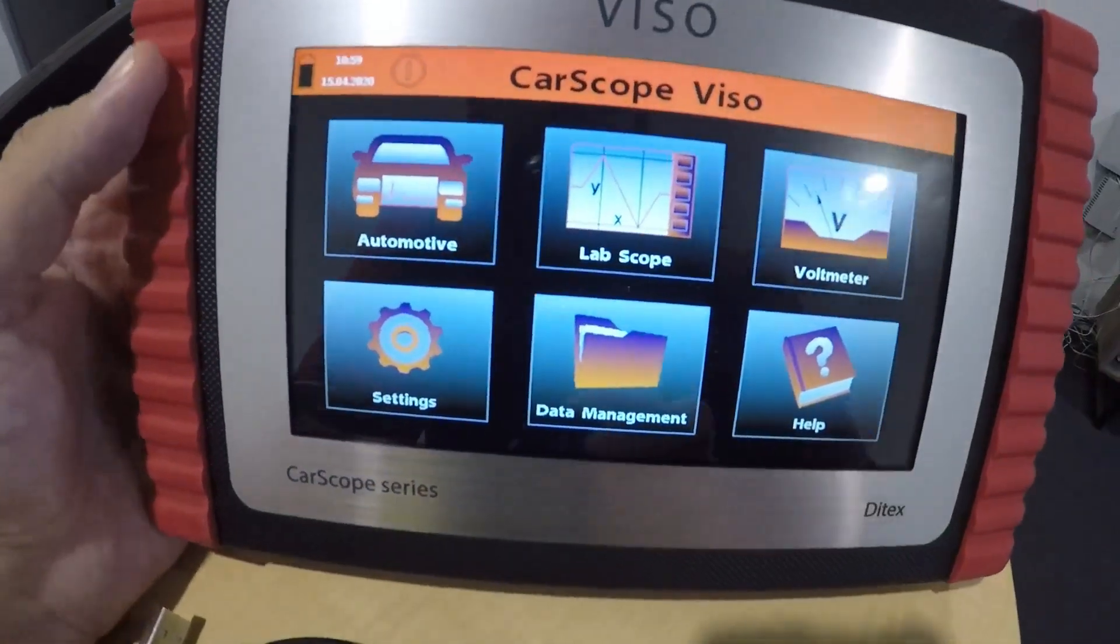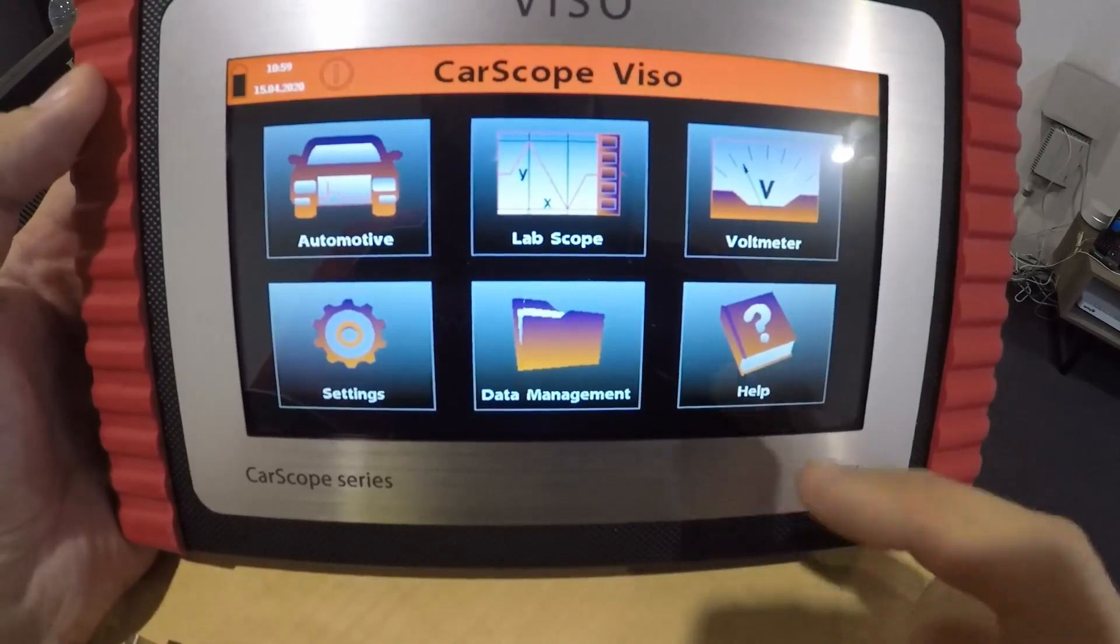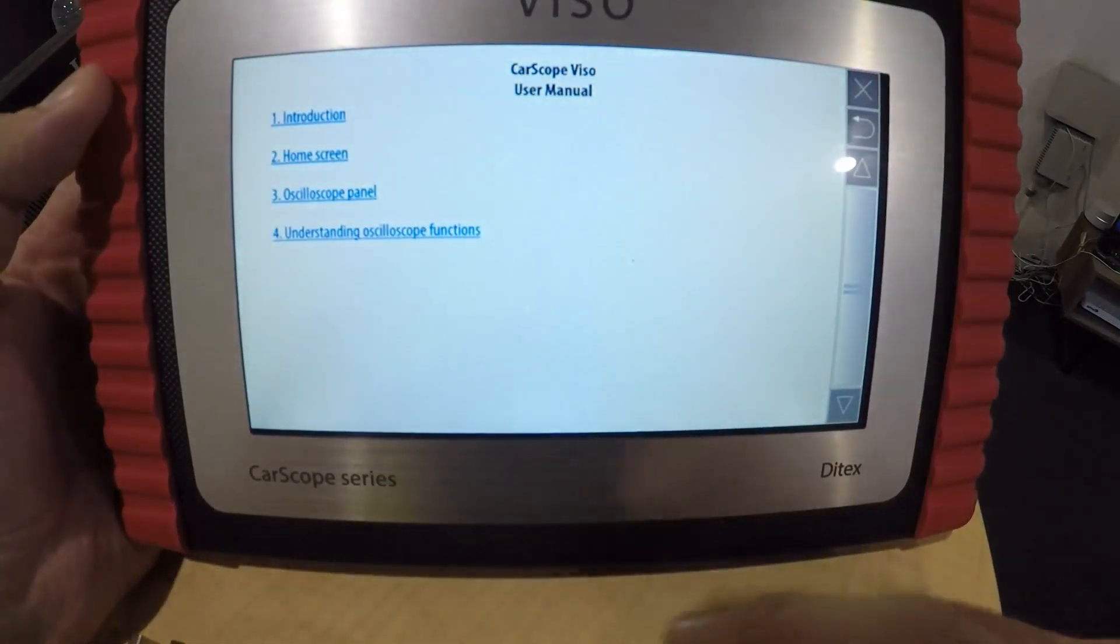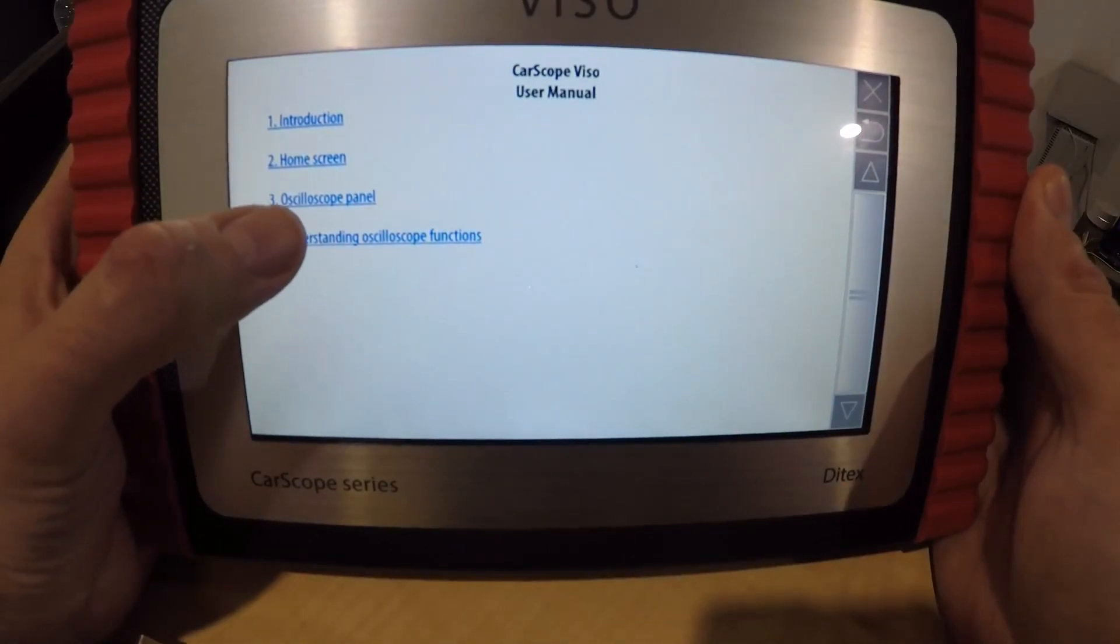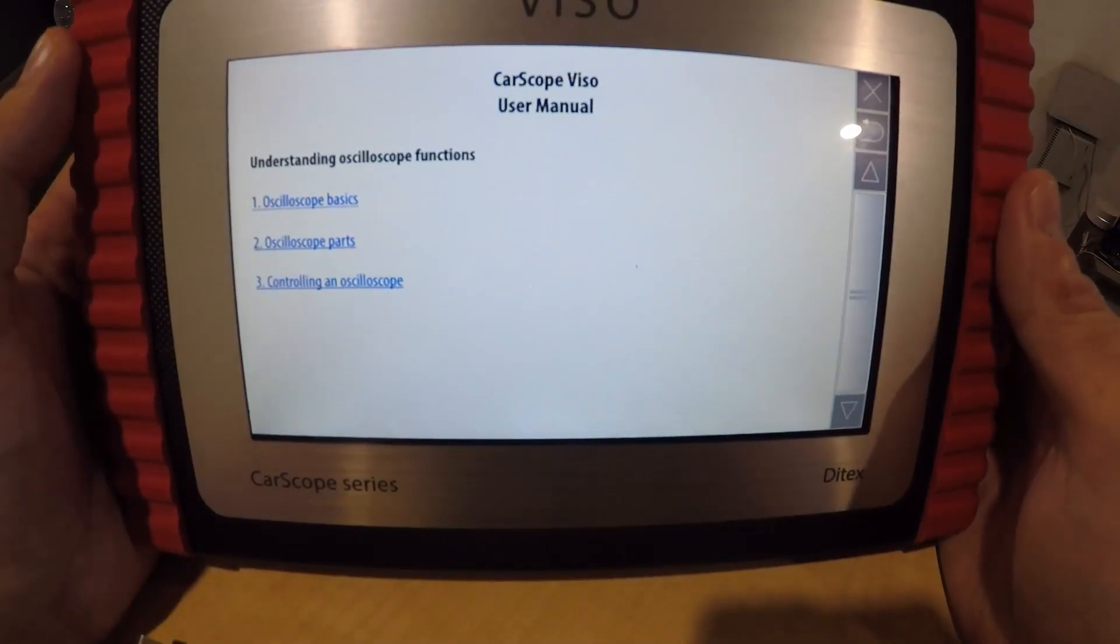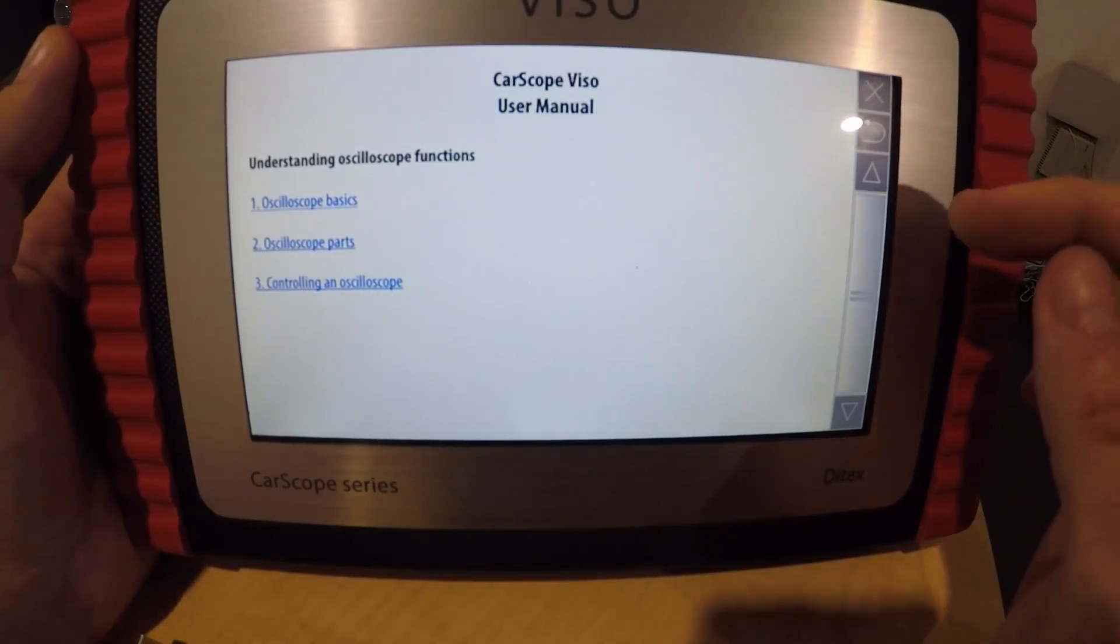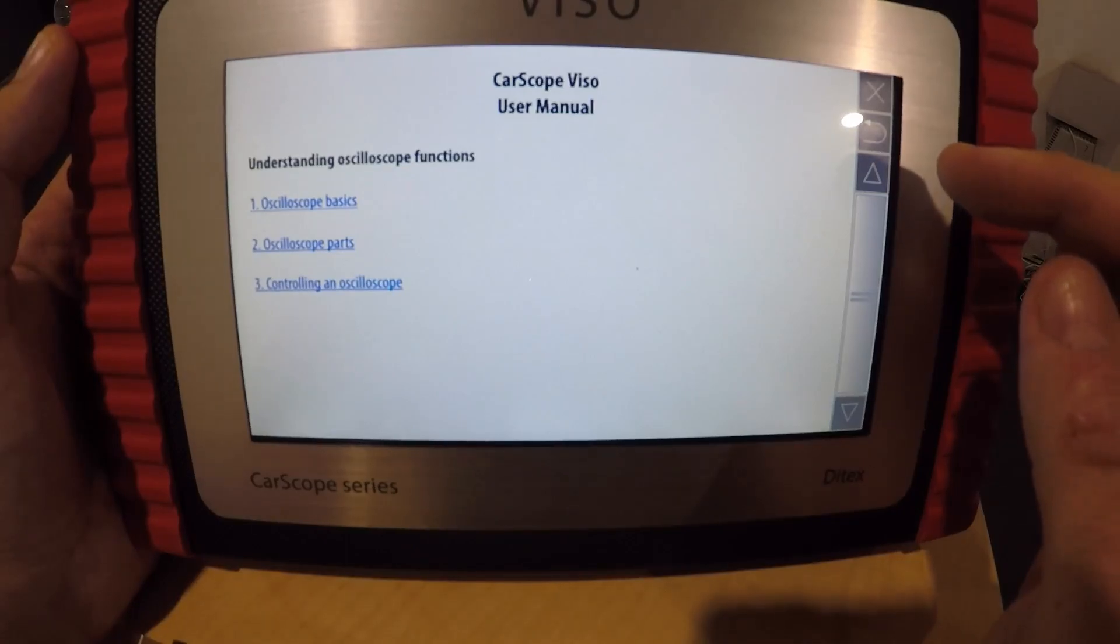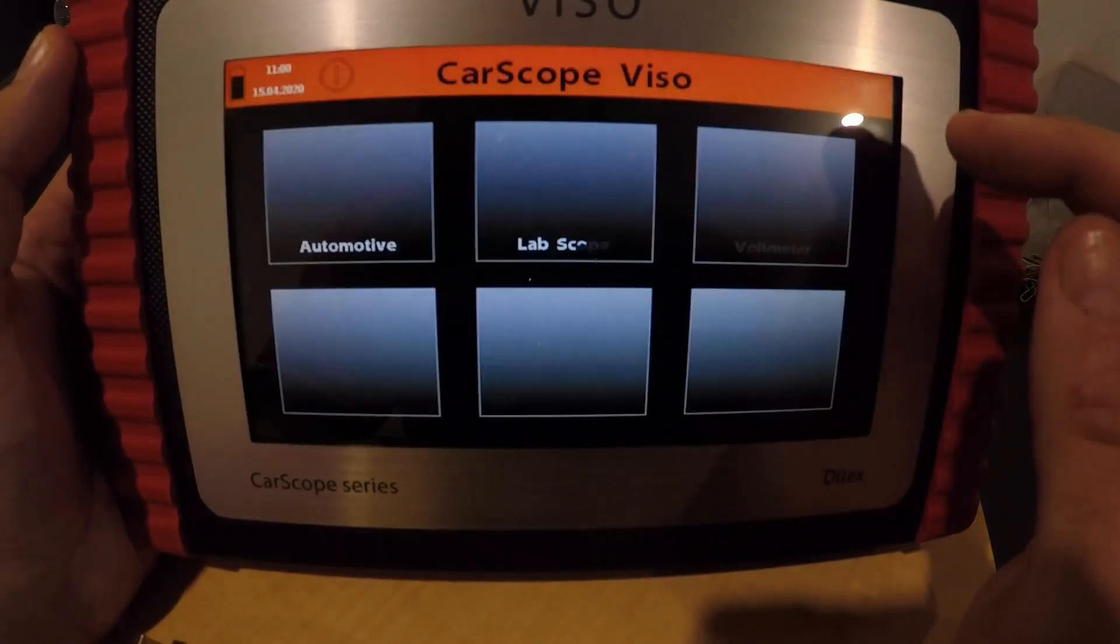In regards to the scope software, very simple. There's a little help thing here. Let me just show you. It gives you simple instructions: introduction, oscilloscope panel, understanding oscilloscope function. Obviously you probably know all this stuff before you bought this. Otherwise you probably wouldn't buy a scope anyway, not of this caliber, this cost if you were just starting out and didn't know what you were doing.